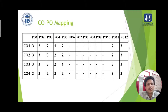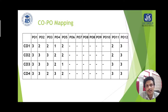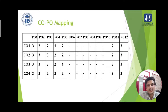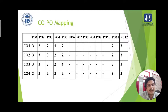In the course outcome and program outcome mapping, there are 12 program outcomes mapped to the course outcome statements. For the four course outcomes of basic electronics engineering, different weightages are assigned to each program outcome column. A value of 3 depicts high weightage, 2 means moderate linking, 1 stands for least linking, and when there is no link, it is kept vacant with a dashed line.